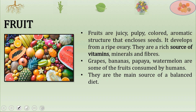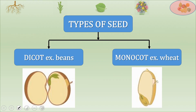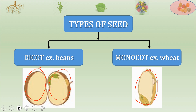Now let us talk about seeds. Seeds which get divided into two equal parts are called dicotyledonous seeds; for example, bean. Seeds which do not divide into two equal parts are called monocotyledonous seeds. If you take a wheat grain, soak it in water and try to break it, it cannot be divided into two parts — so wheat is an example of a monocotyledonous seed.